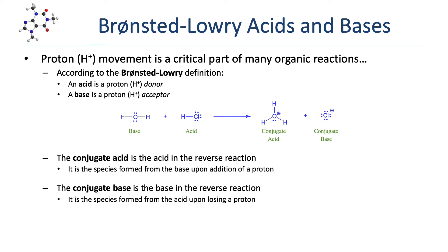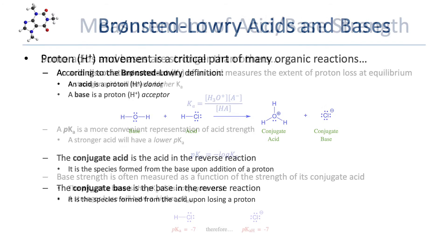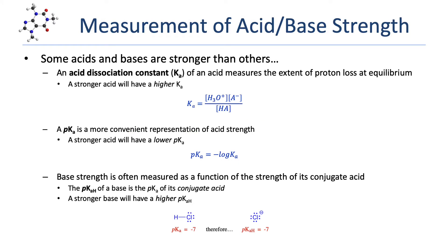We're going to be using the concepts of conjugate acid and conjugate base throughout our study of organic chemistry. Not all acids and bases are created the same — some acids are stronger than others, some bases are stronger than others. When it comes to acids, we measure and report the acidity of an acid using an acid dissociation constant, or Ka value.